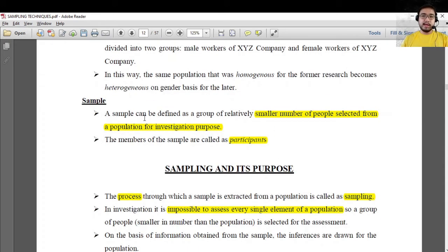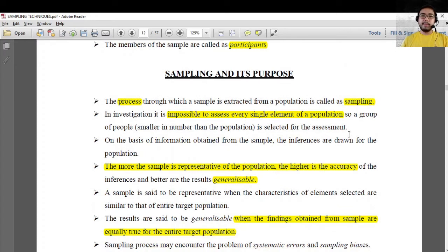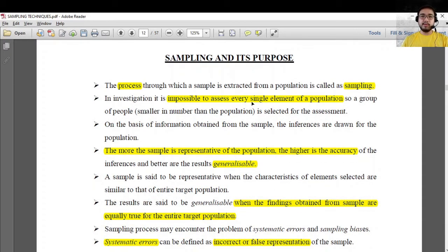When it comes to our sample, it's a smaller number of people selected from a population for investigation's purpose. Why is it good to use sampling? Remember that sampling is a process to extract sample from the population. We do sampling because sometimes it is impossible to assess every single element of a population. For example, if you have 20,500 population, I think it is impossible to approach all those members of the population.